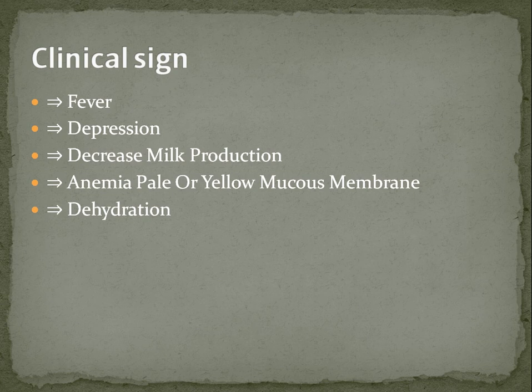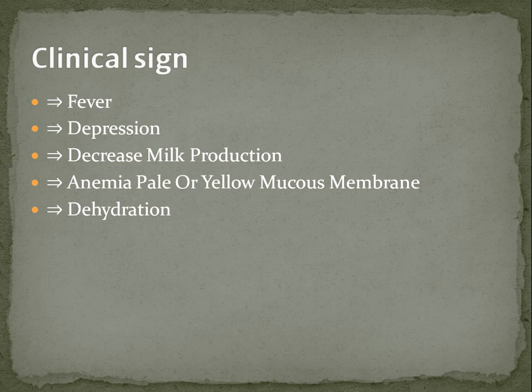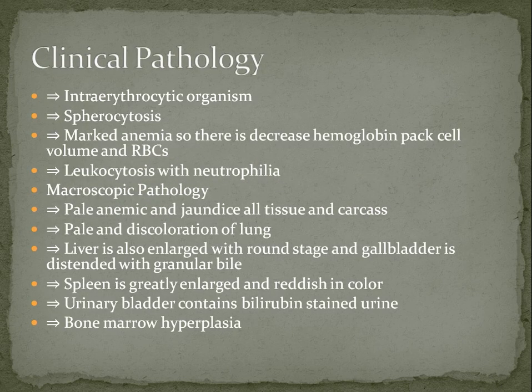To talk about the clinical signs that appear after infestation of anaplasmosis: your cattle will show signs of fever, depression, decrease in milk production, anemia, pale or yellow mucous membranes, and dehydration.